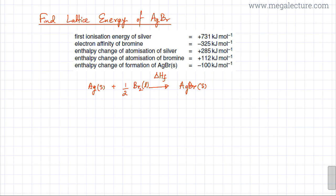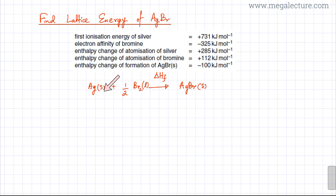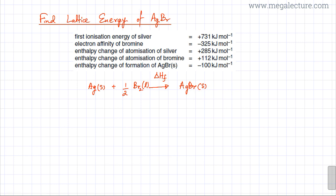That's one path. Now I'm going to create another path — a Born-Haber cycle, or in simple terms a Hess cycle. I'm going to go from silver solid and bromine liquid and stepwise try to make AgBr solid. Hess's law states that the energy changes in one path are going to be the same as the energy changes of the other path.